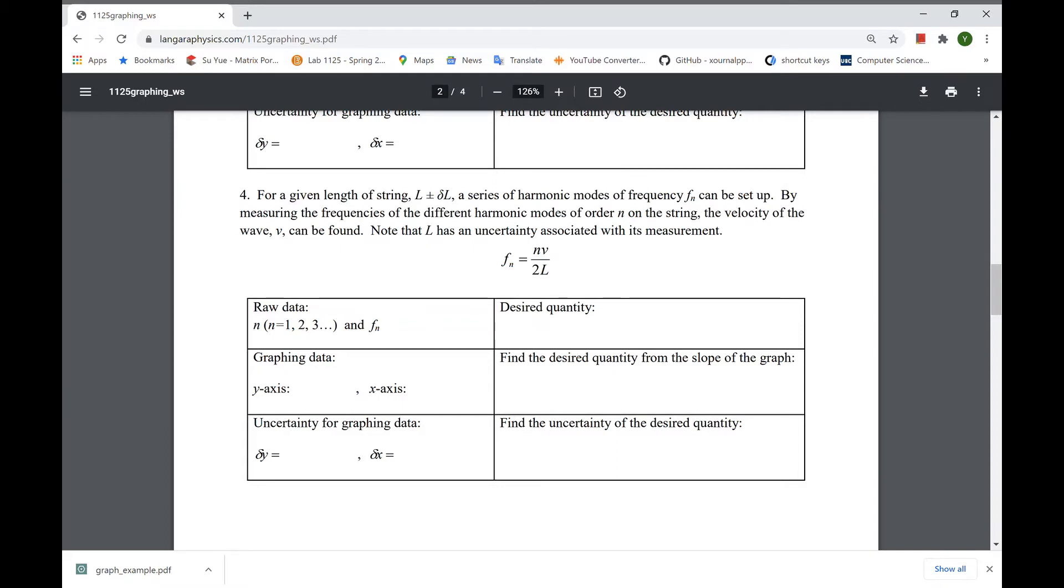The raw data, n is called a harmonic number. It's an integer, so there is no uncertainty. You can write δx equals zero. And there is also another difference: when you find the uncertainty of the desired quantity v, there are two things in it. One is the uncertainty of the slope and the other thing is the uncertainty of the length of the string.